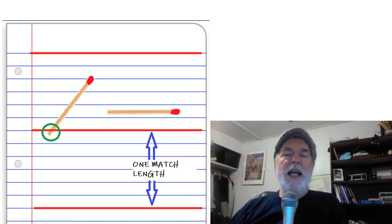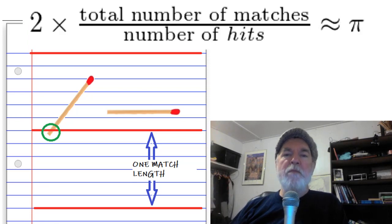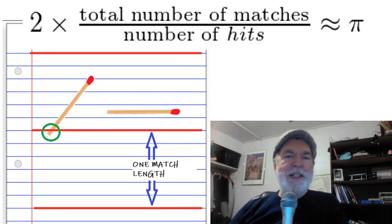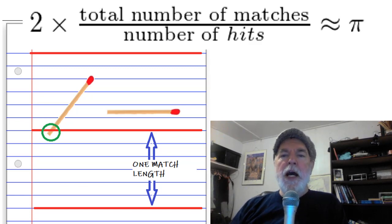Now take the total number of matches that you used—that includes the hits and the non-hits—divide it by the number of hits, multiply the result by two, and voila. So in this picture, a hit means the match covers one of these highlighted lines.